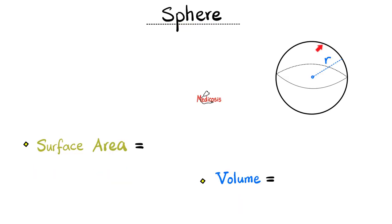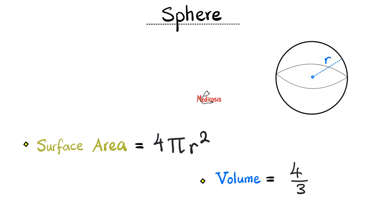Next, the sphere. Think of the sphere as four circles to keep it simple. The surface area of one circle is πr squared — multiply that by four, and you have the surface area of the sphere: 4πr squared. As for the volume of the sphere — how much water you can pour into it — it is four over three times π times r cubed. Squared for the area, cubed for the volume.